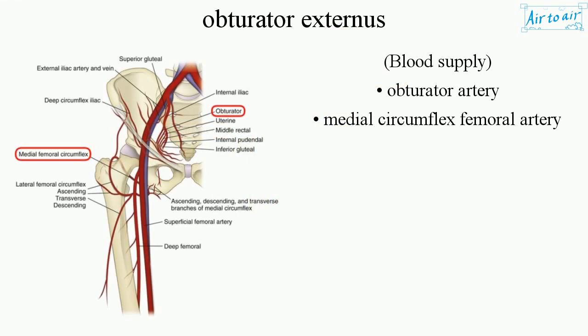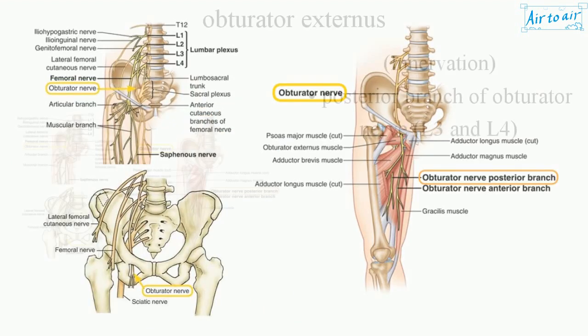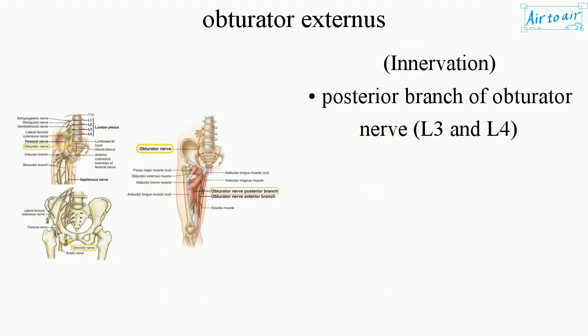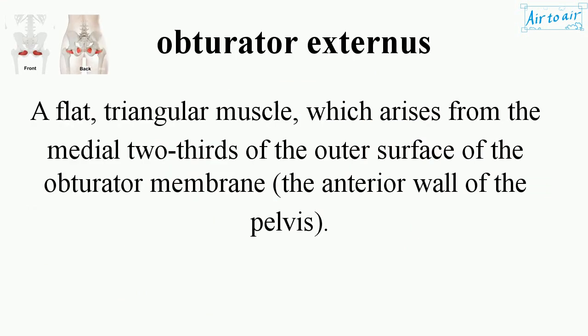Blood supply: obturator artery and medial circumflex femoral artery. Innervation: posterior branch of the obturator nerve, L3 and L4.